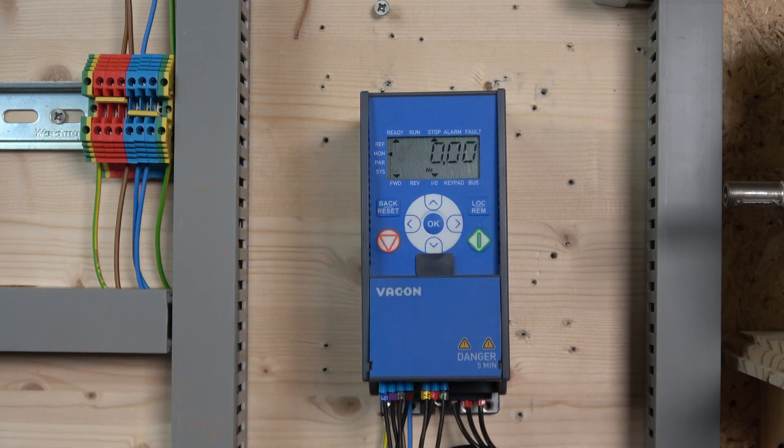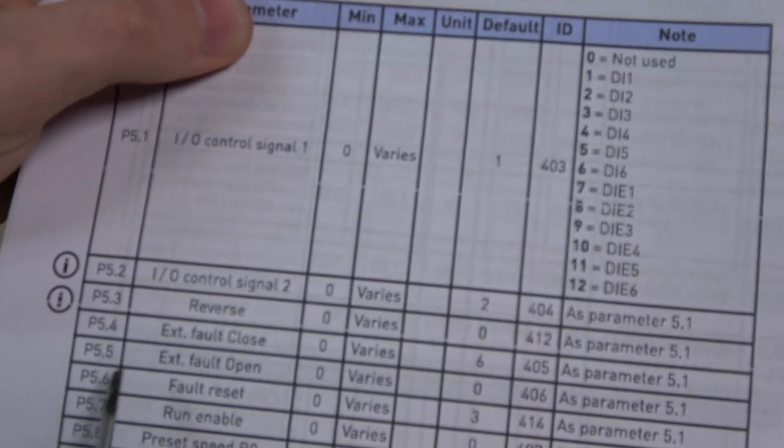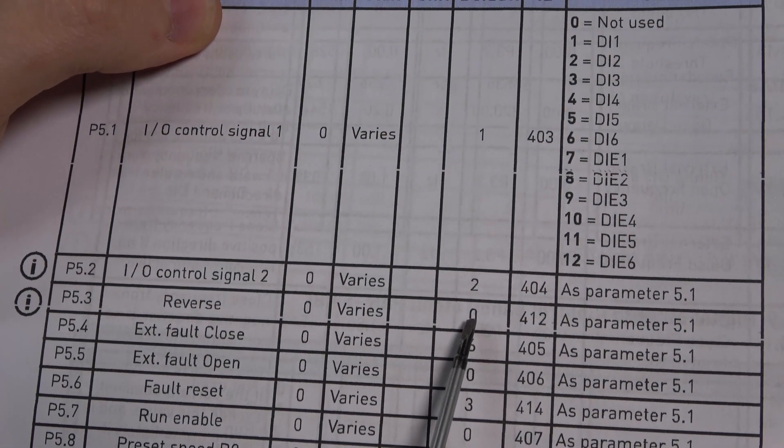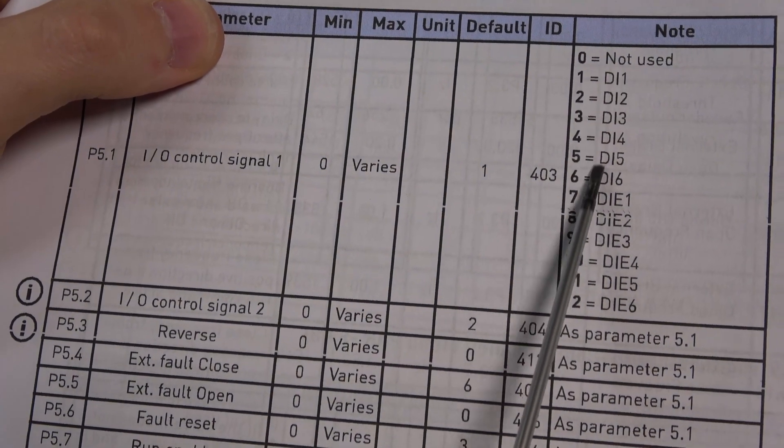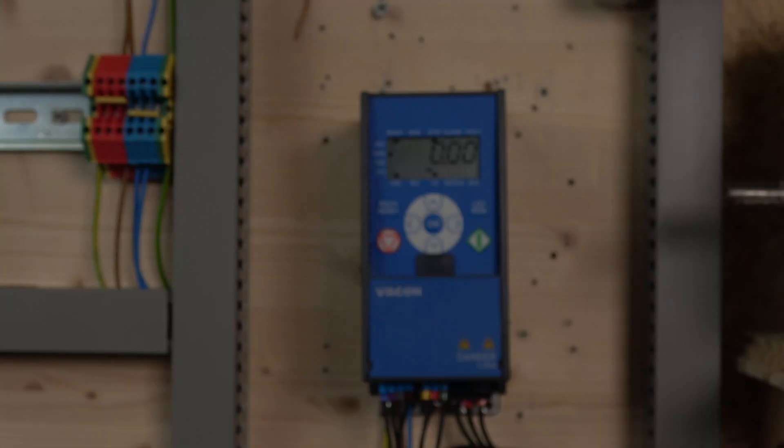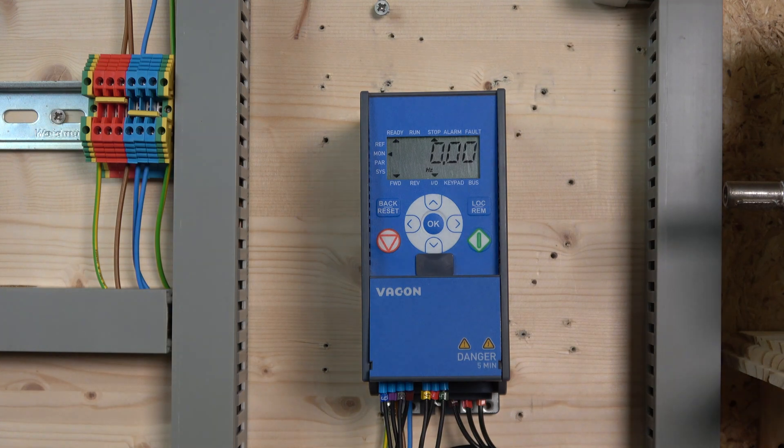We need to make sure digital input 3 is assigned. Go to parameter 5.3 and change it to whichever input you want. I assigned it to 3. That's all you need to do. Cover on - let's test it out.